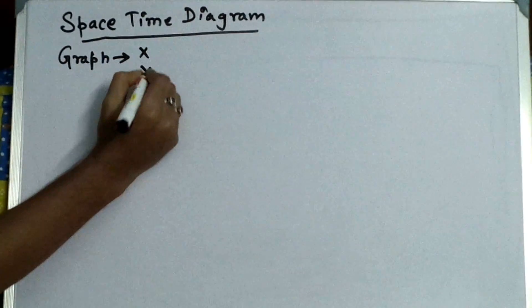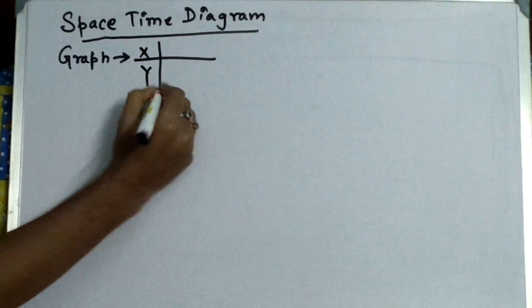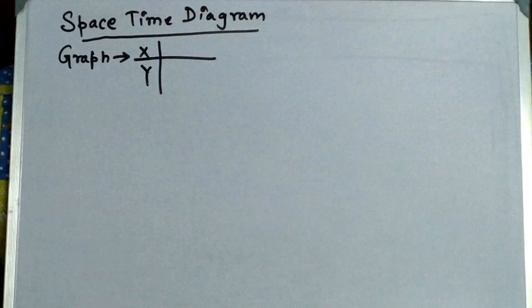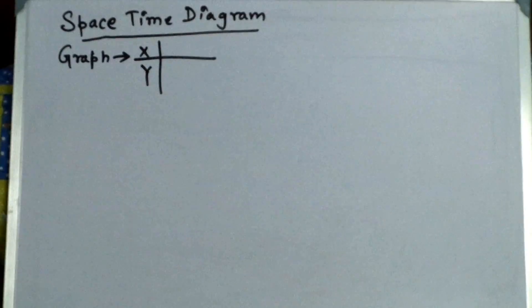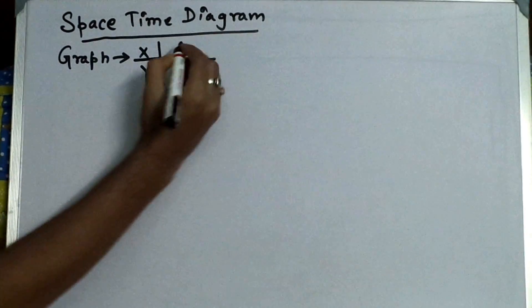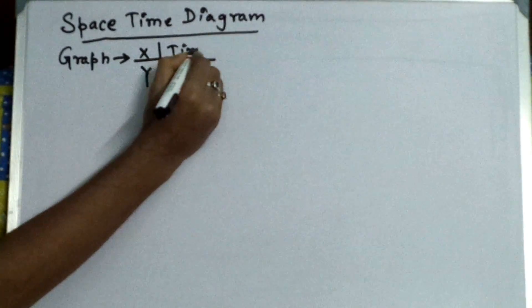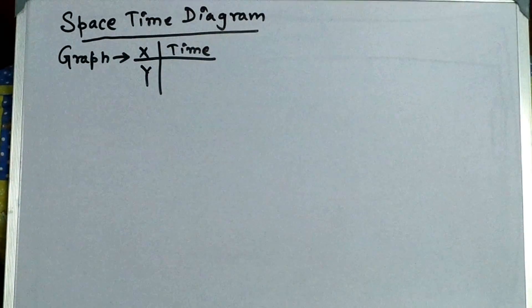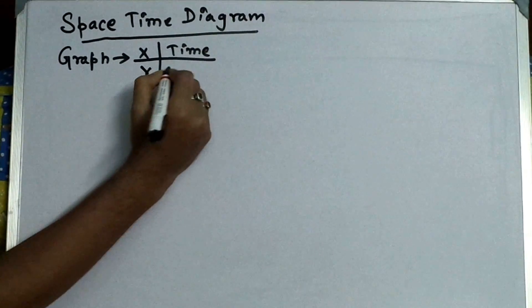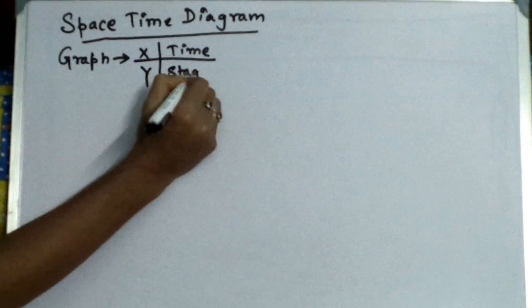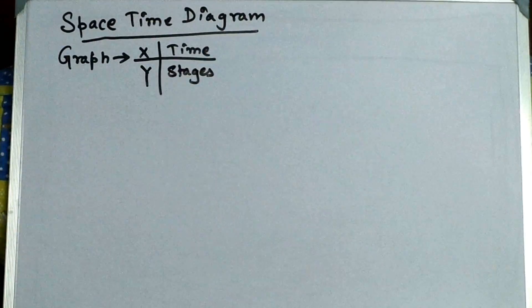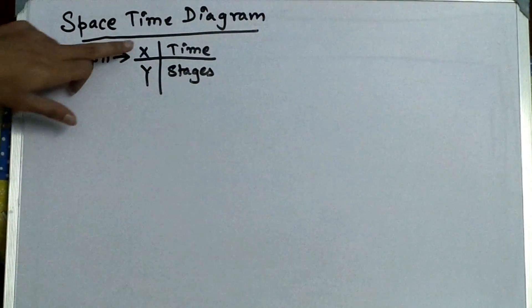X and Y, as we all know it has two axes. It's a two-dimensional graph in which the x-axis represents the time domain and the y-axis represents the stages that are being executed by the computer. So x-axis represents the time and y-axis represents the stages.